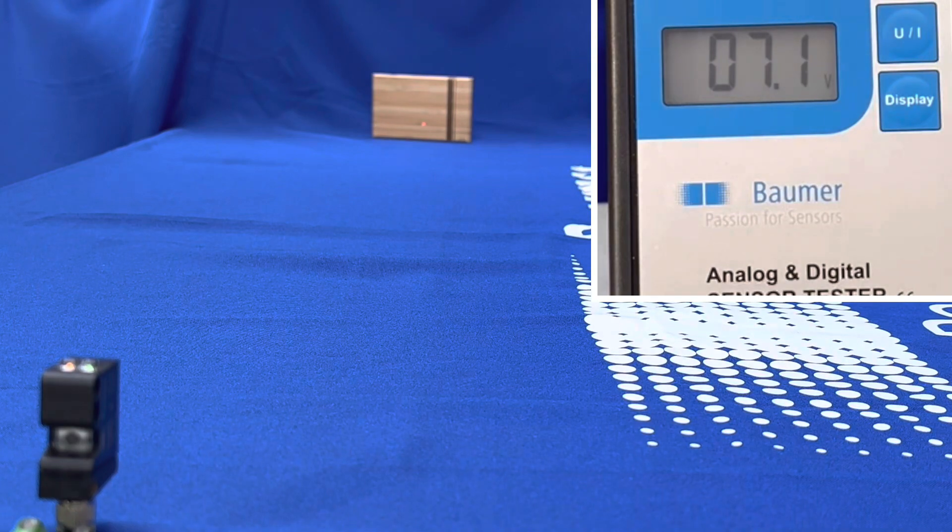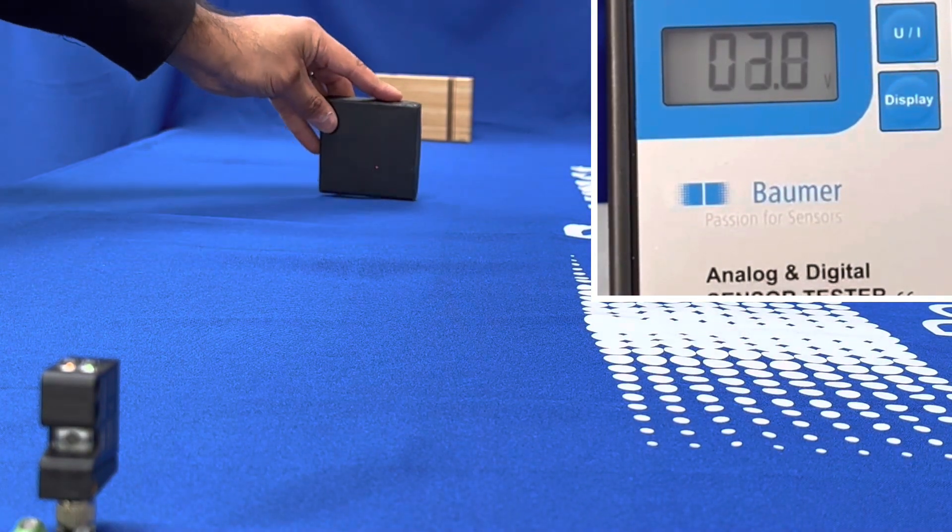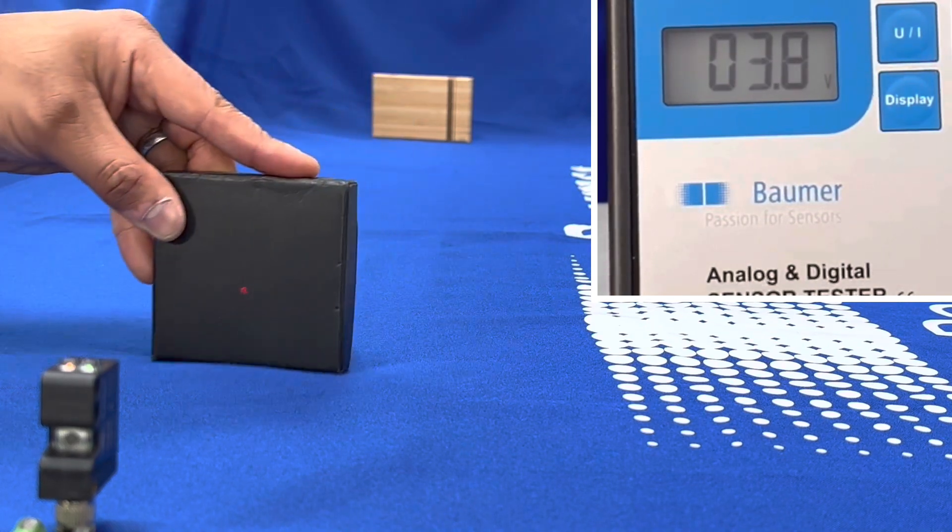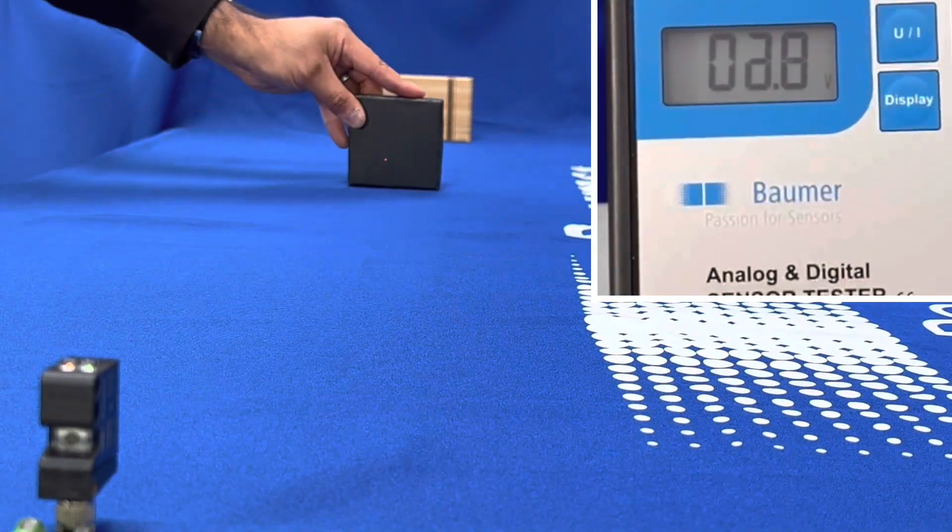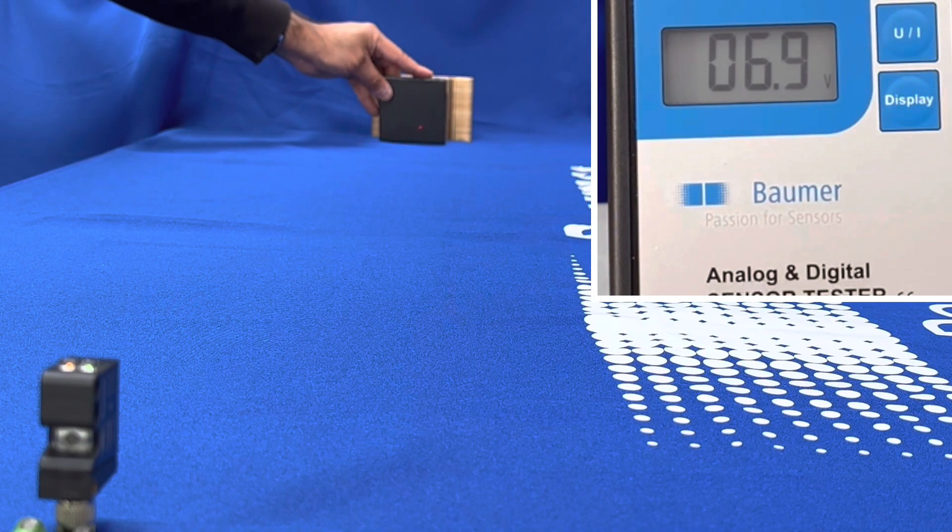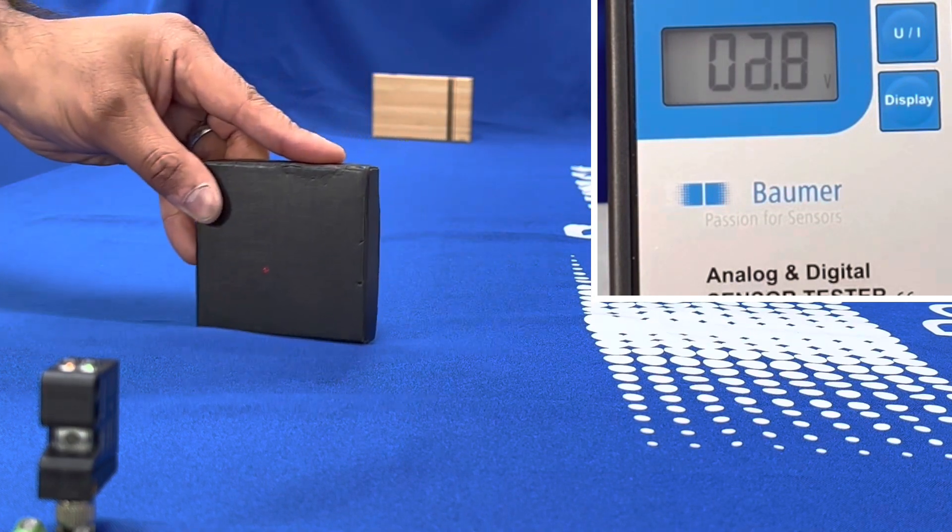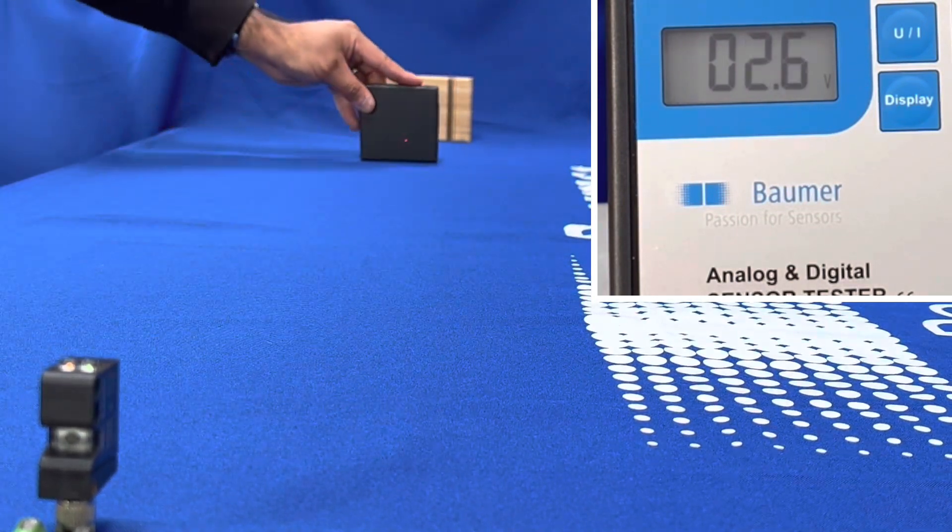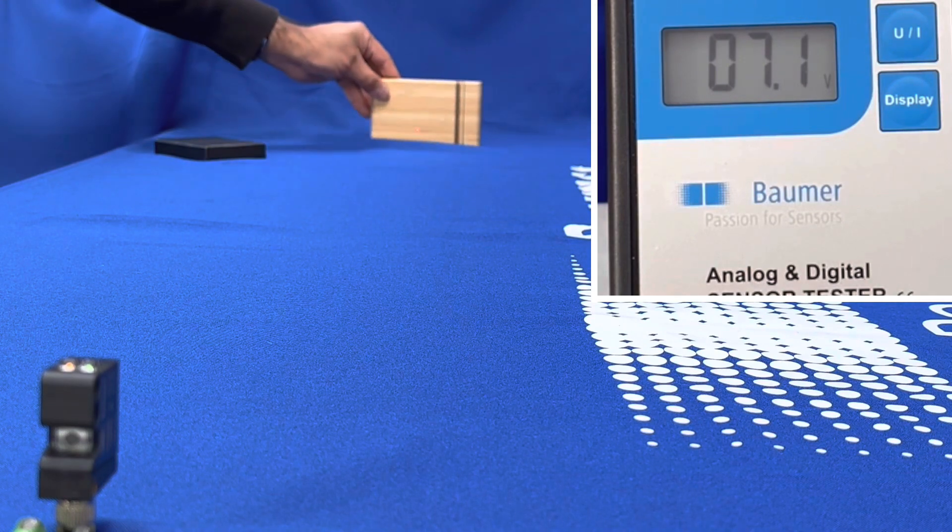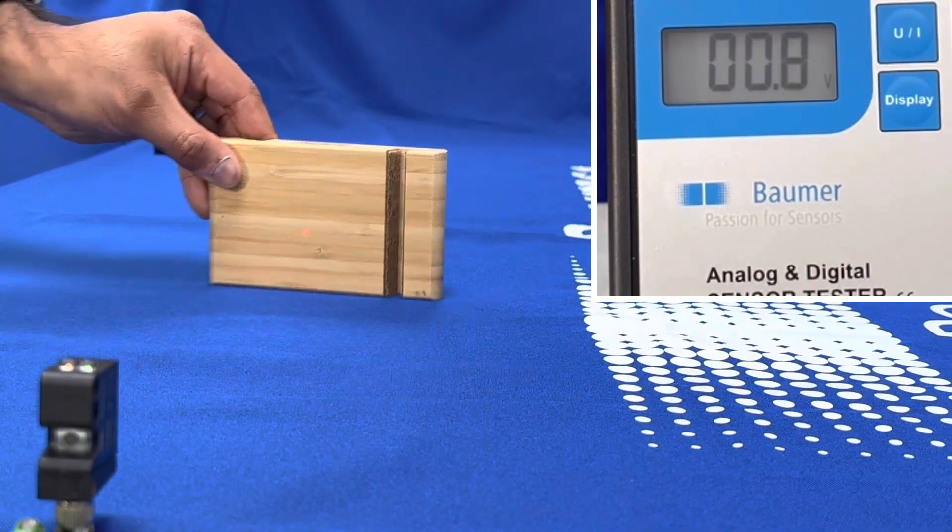With standard targets like the wooden targets or a darkened target, you get a very good analog output plus or minus a few millimeters throughout its 1.8 meter range with a nice small beam spot.